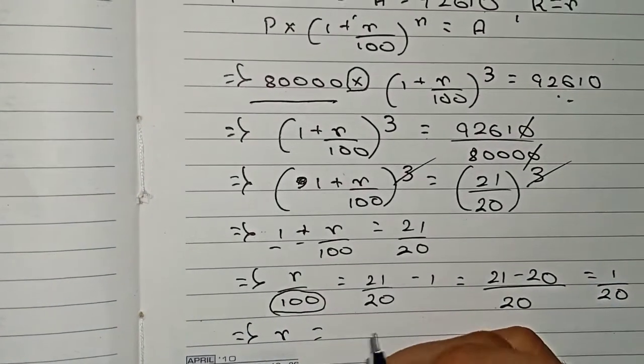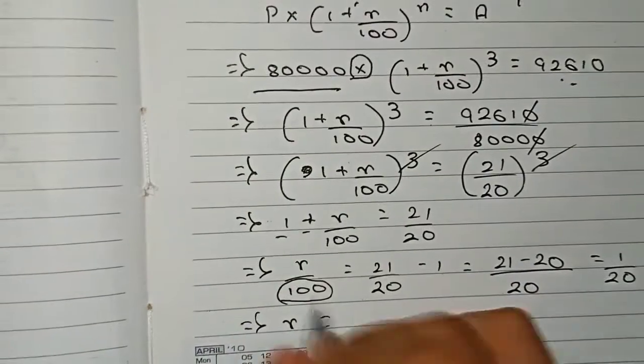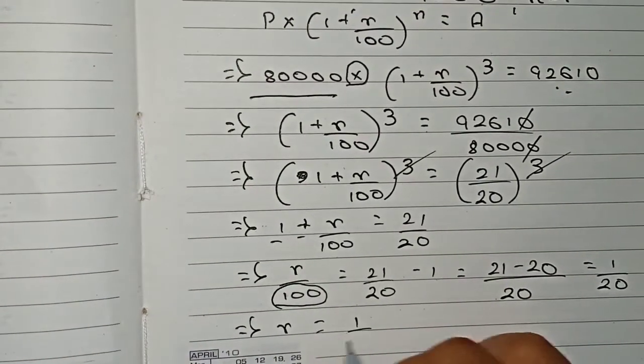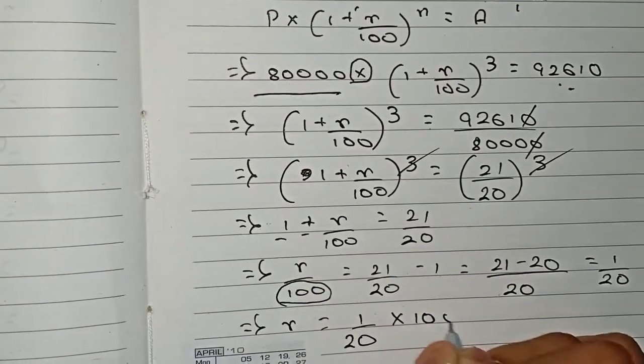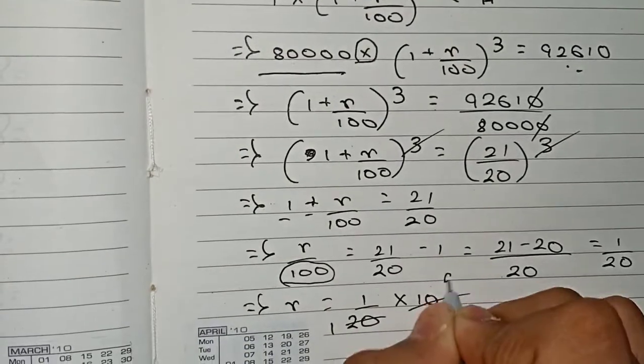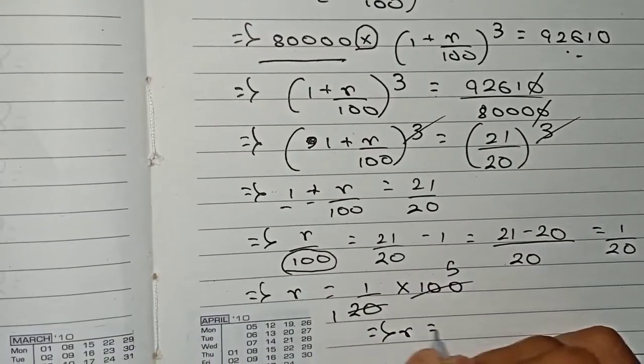So now r equals... now I take this 100 to the right side. As it is in division here, it will go for multiplication here. So 1/20 times 100, if we cut it, it will become 5. So the rate of interest is equal to 5 percent.